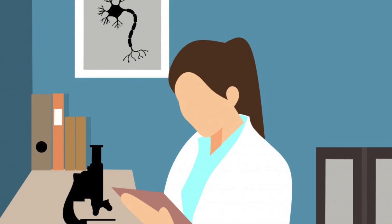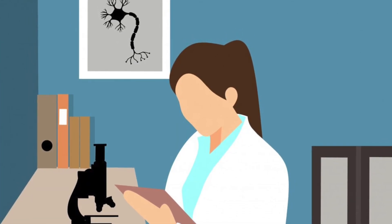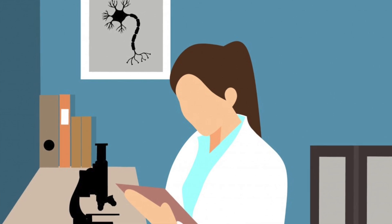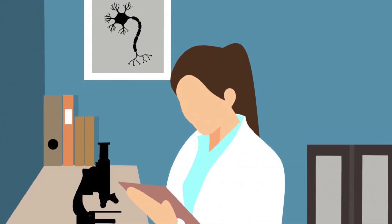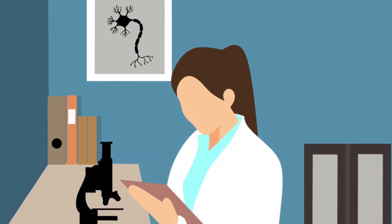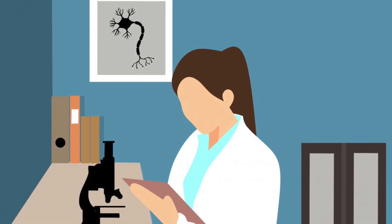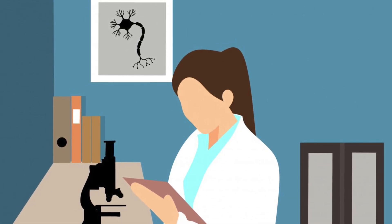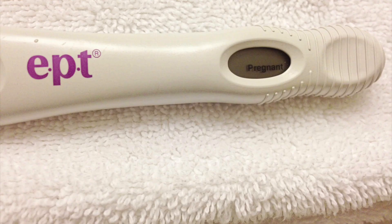Monoclonal antibodies can also be used for research, as they can locate or identify specific molecules in a cell or tissue. When the monoclonal antibodies bind to the desired molecules, scientists can observe what's happening by the buildup of fluorescence.